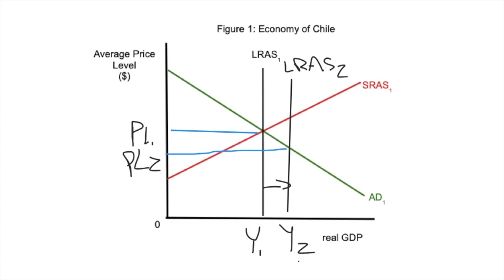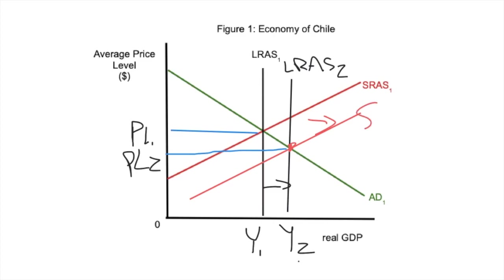Or if they discovered a massive underground oil reserve in Chile, the capacity of the nation would move outward, because that creates a downward pressure and an increase in the overall capacity of a country. This is considered good growth in the sense that it's permanent. And the short-run would then shift out as well — because the long run always pulls the short run with it — giving us SRAS2.